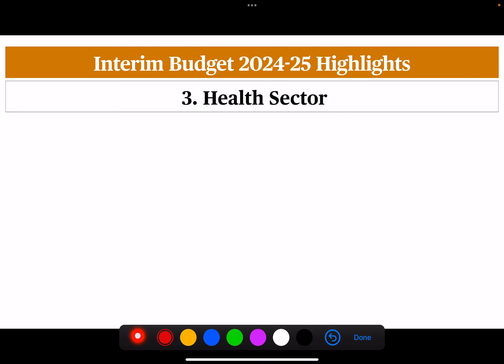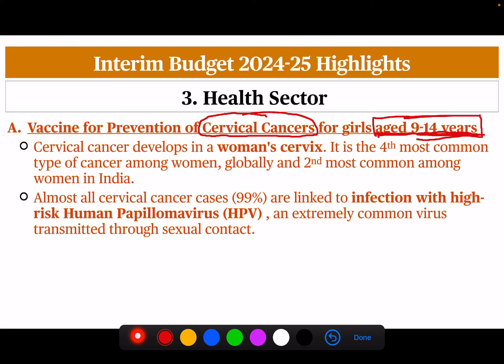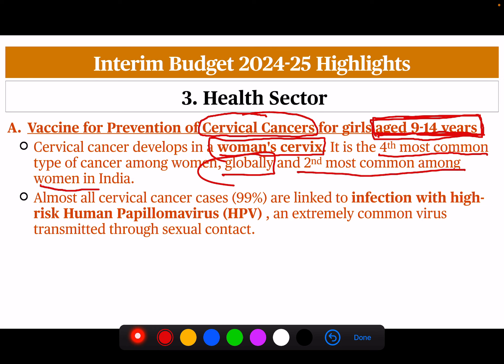The next sector is health. The government is targeting a vaccine for prevention of cervical cancer for girls aged 9 to 14 years. Cervical cancer develops in a woman's cervix. It is the fourth most common type of cancer globally and the second most common among women in India, which shows how important it is to prevent cervical cancer.